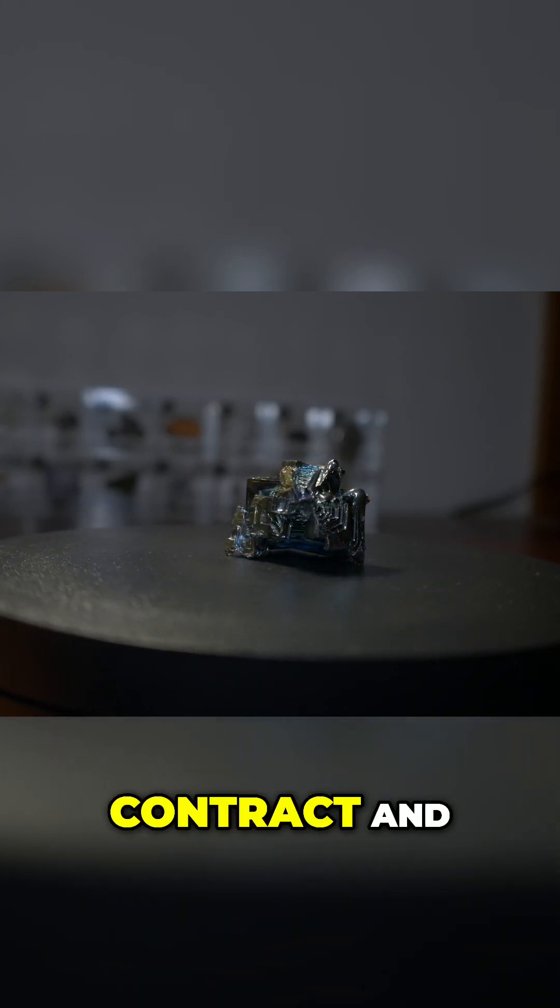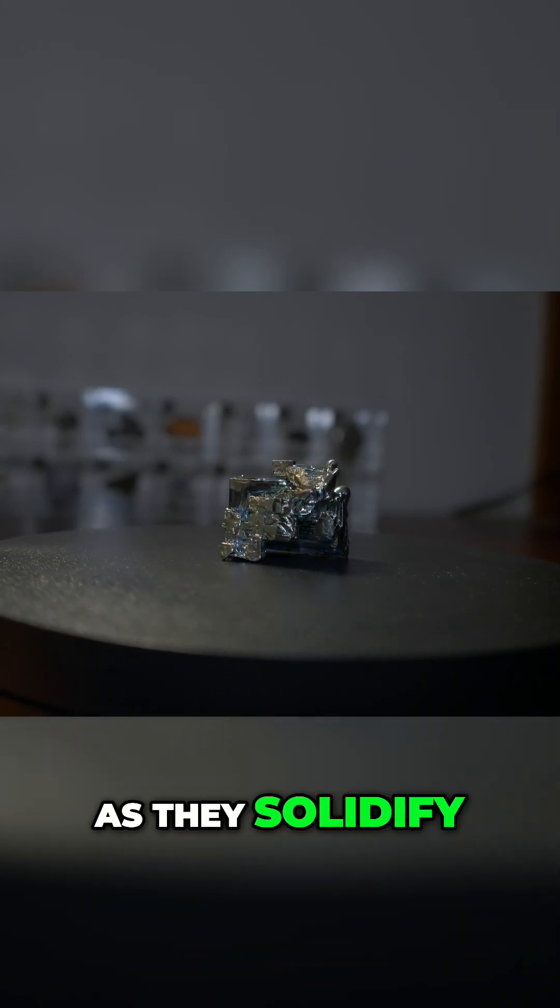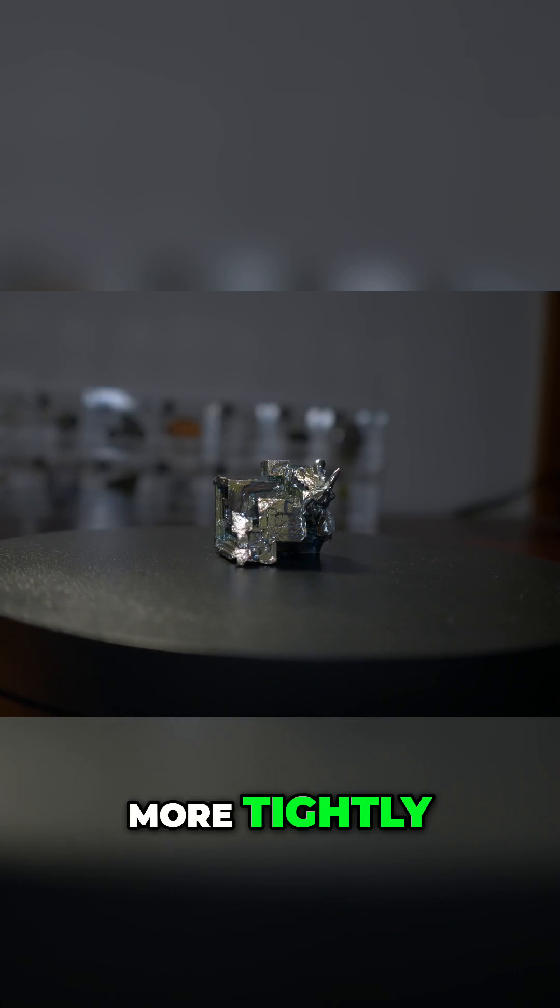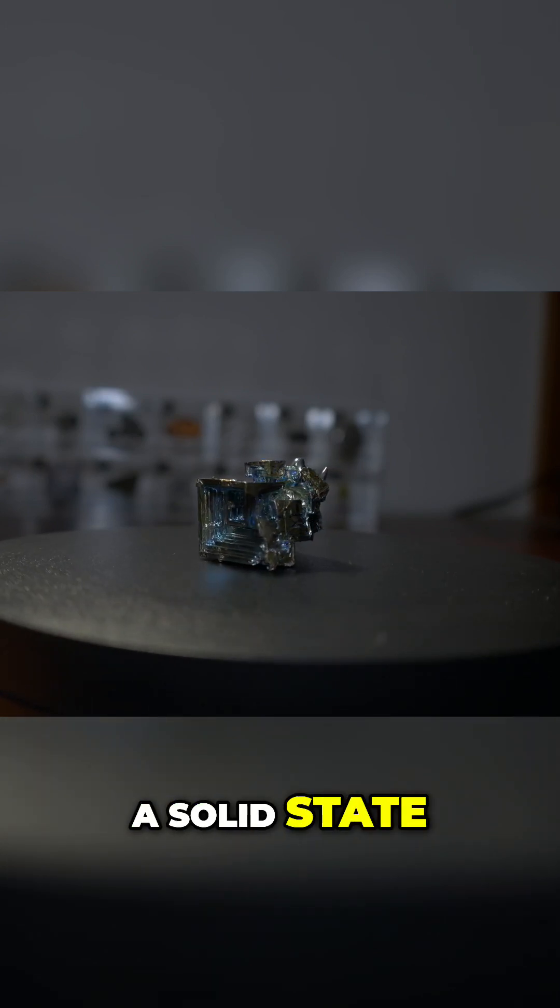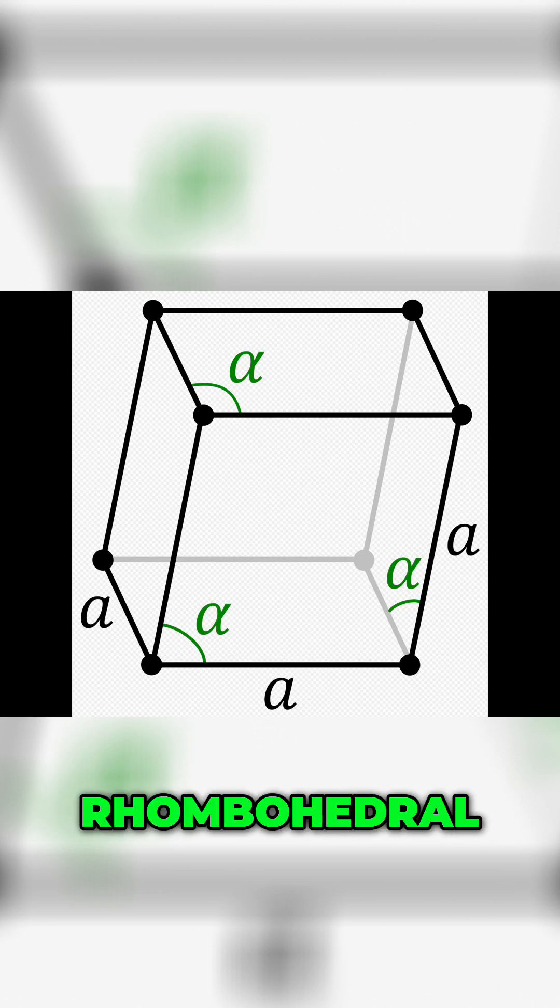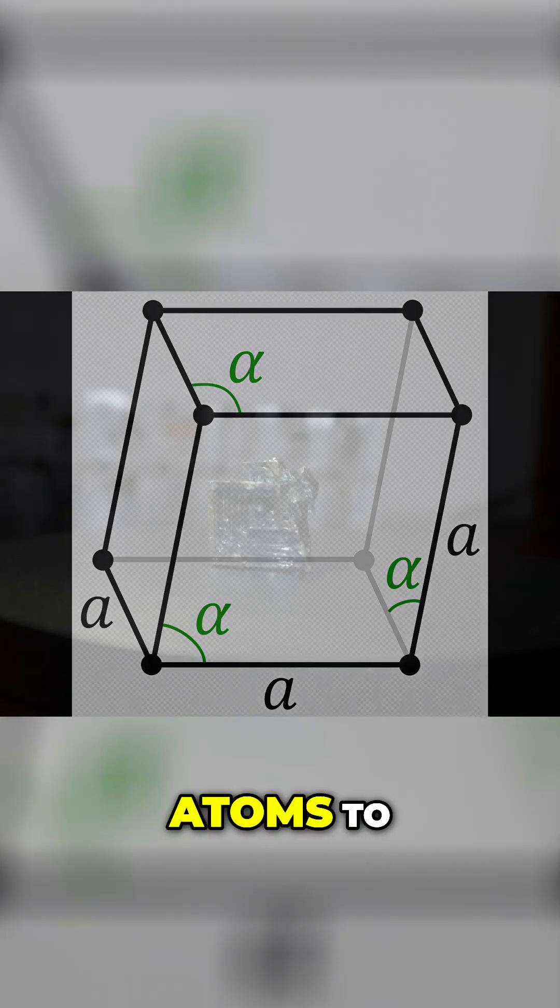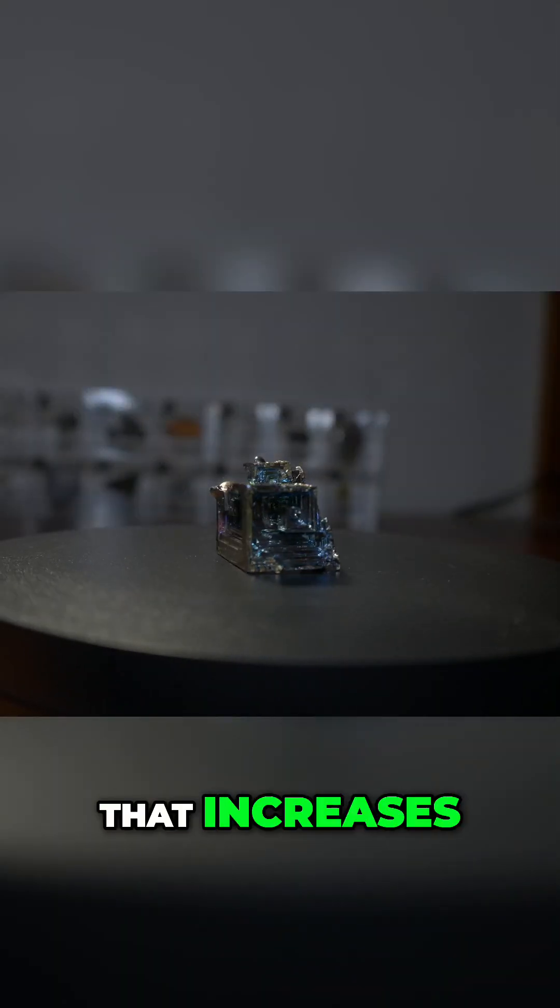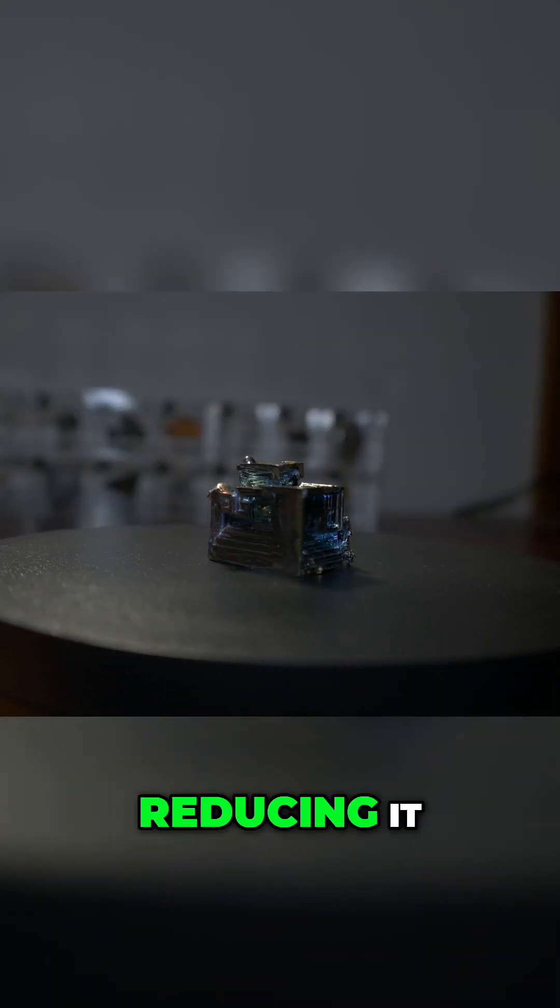Most metals contract and become denser as they solidify, because their atoms pack more tightly together in a solid state. However, bismuth's atomic arrangement, known as the rhombohedral structure, causes the atoms to organize in a way that increases the volume instead of reducing it.